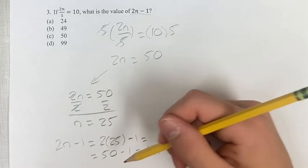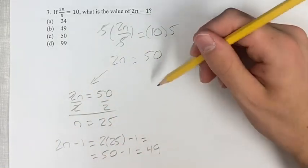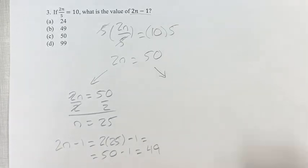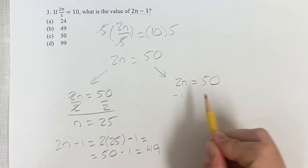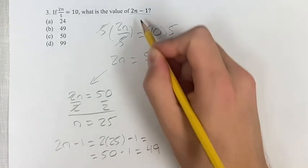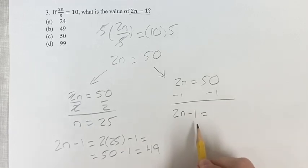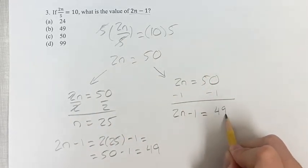You can do this. This is the perfectly reasonable way that you will solve most of these sorts of problems. But sometimes you can notice a slight shortcut. If we have 2n is equal to 50, notice if we subtract 1 from both sides, here we'll have 2n minus 1, which is the thing we're trying to find the value of. And we get that it's equal to, so this is going to be our answer, 50 minus 1 is 49.